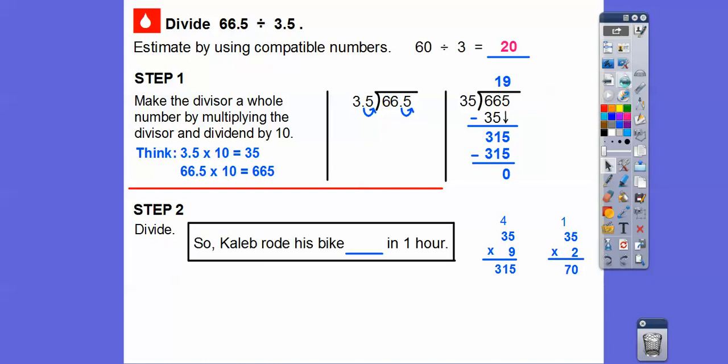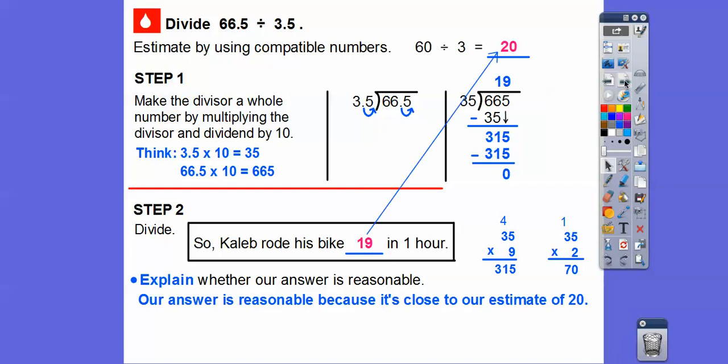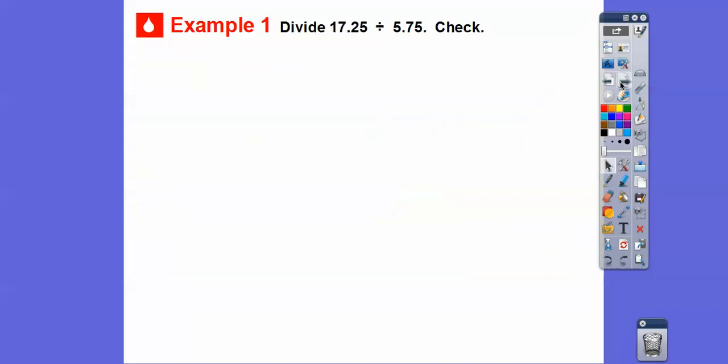Let's answer the question. Caleb rode his bike 19 miles in one hour. That's pretty good. Why is this answer reasonable? That's reasonable because it became close to our estimate of 20 right there.